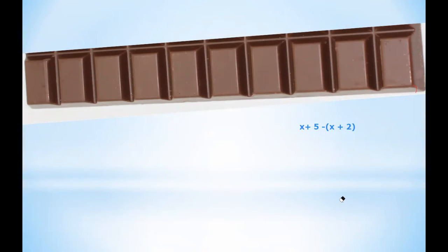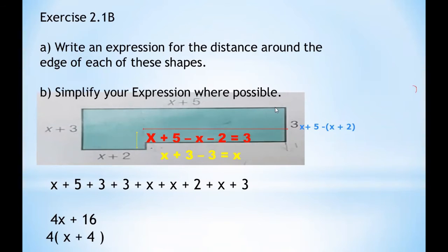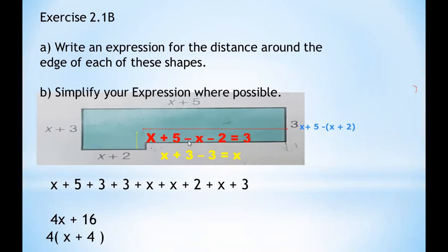Applying that same logic back to our question: the full length of this side is x+5, and x+2 has been 'used up,' just like the eaten chocolate pieces. So we compute (x+5) minus (x+2), which gives minus x minus 2. The x terms cancel and 5 minus 2 is 3, so the length of this side is 3.